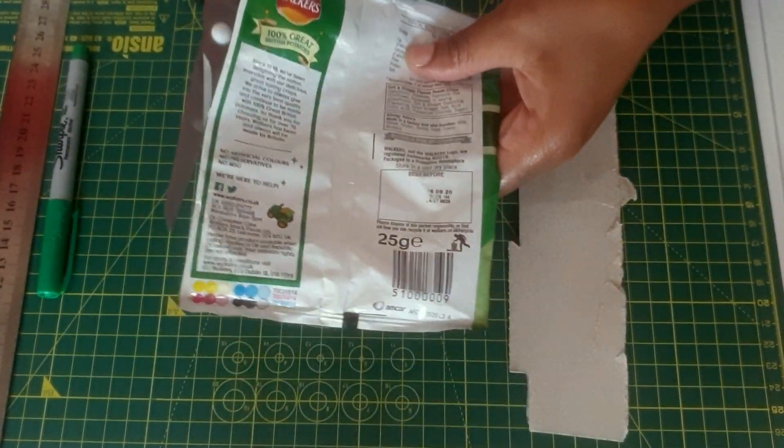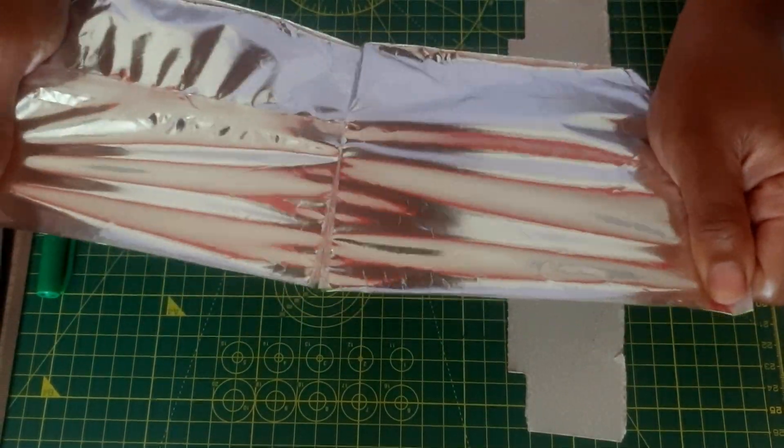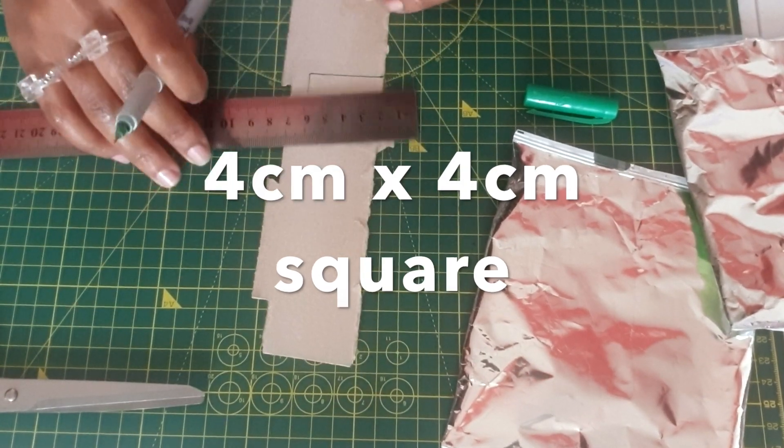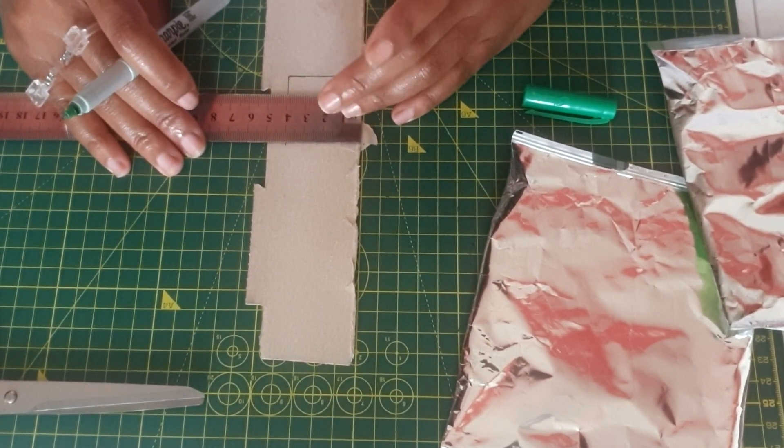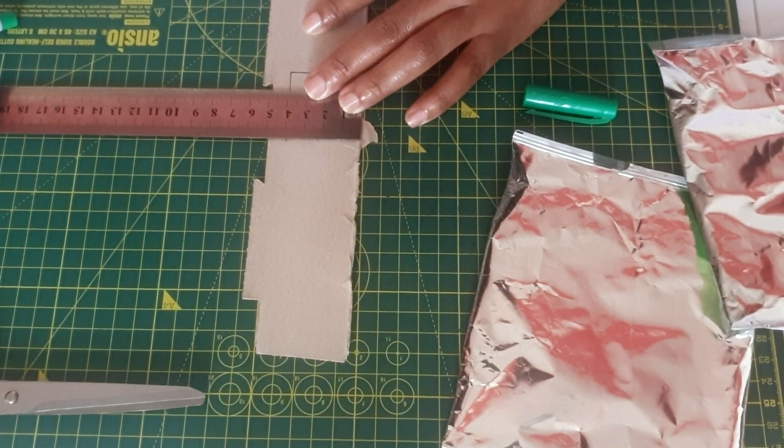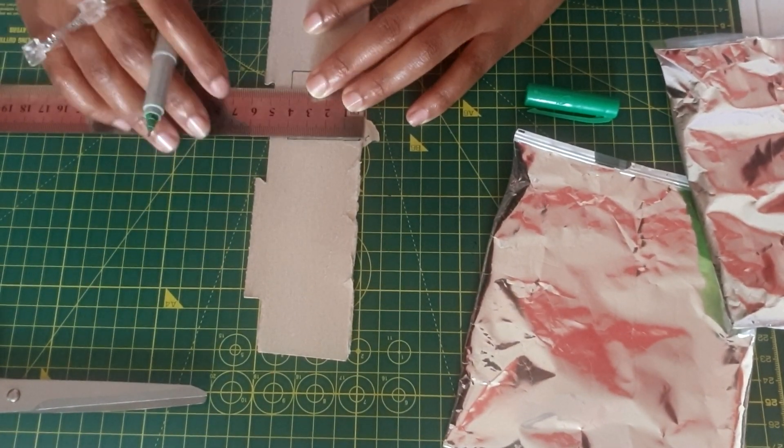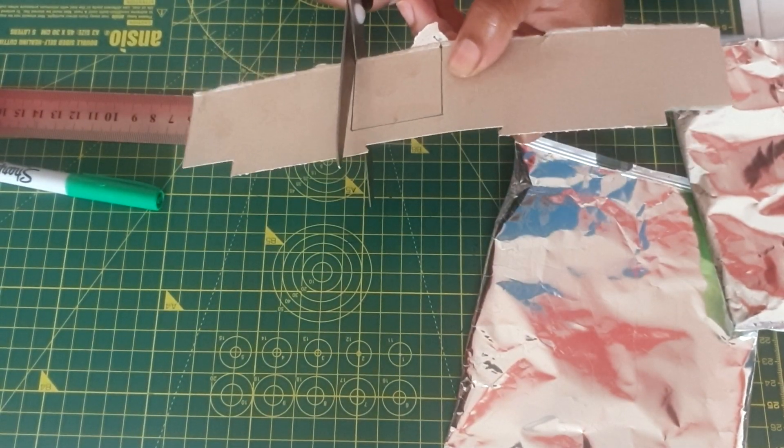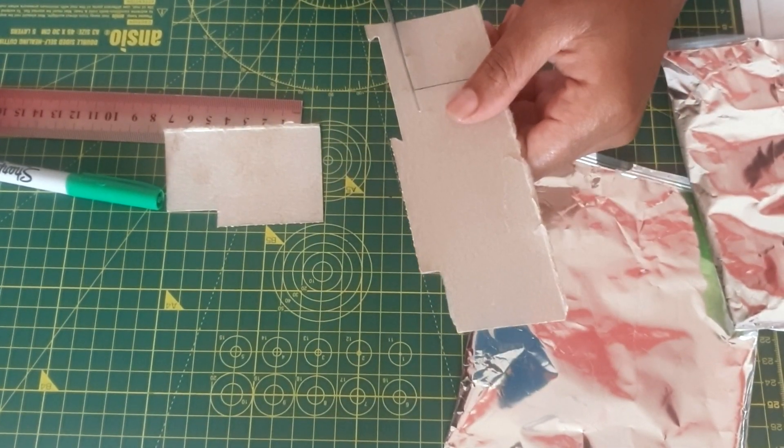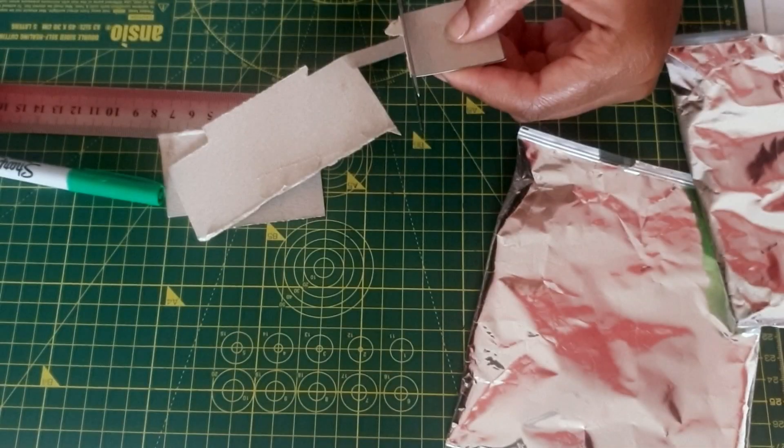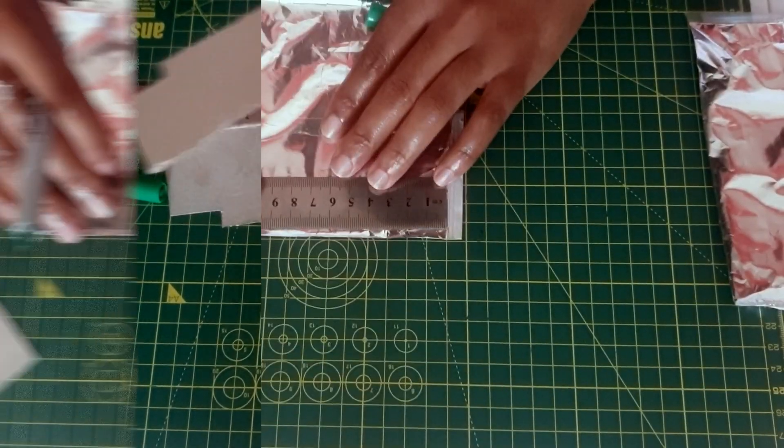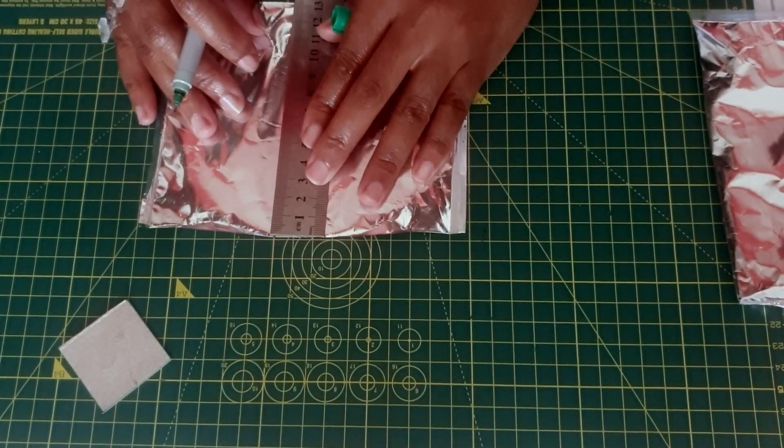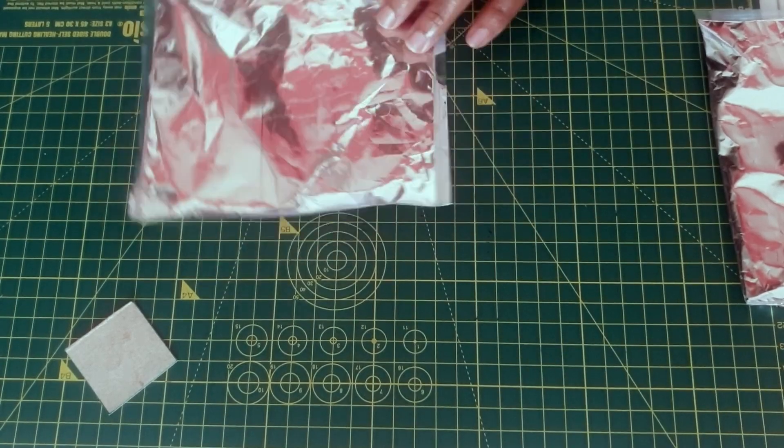You'll want to get all of the components and bits and pieces for creating your jewelry piece together. The first thing you can do is cut a four centimeter by four centimeter square, and then what you can do is measure out a nine centimeter by six centimeter rectangle on the plain side of your crisps packet.